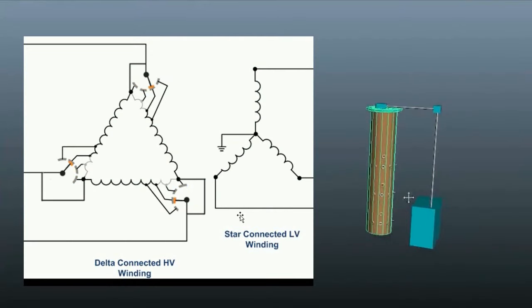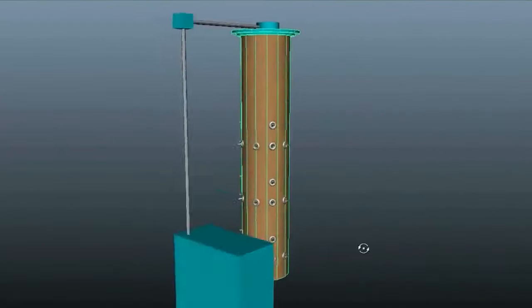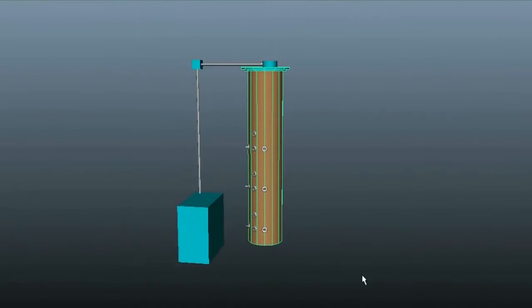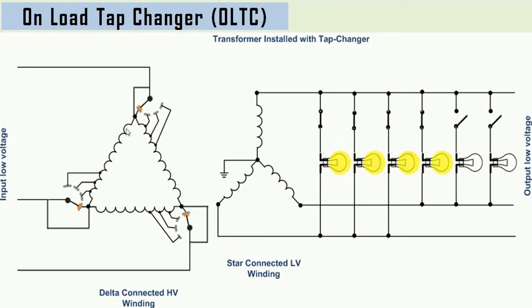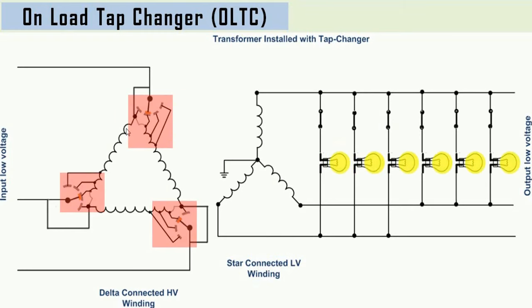From the name itself, it is clear that OLTC helps in changing the taps of the transformer during on-load condition. Now the question is, why is it necessary to change the position of taps in the transformer? This is because when power or distribution transformers get loaded, their terminal voltage gets reduced due to internal voltage drop in the impedance of the winding. Similarly, when the load on the transformer is reduced, its terminal voltage exceeds the expected value. This variation of terminal voltage due to variation of load is known as voltage regulation.